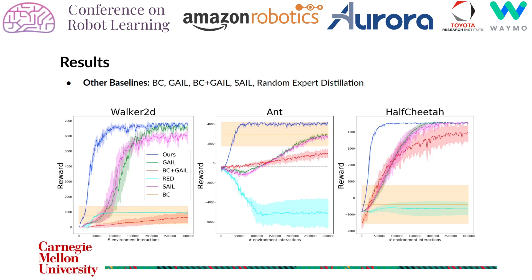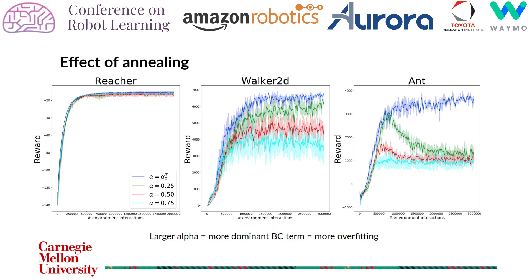We compare our method with 5 other baselines on 5 MuJoCo environments. Our method performs consistently and converges much faster than GAIL. We see the behavior cloning plus GAIL baseline does not perform well. We also compare the effect of annealing in our method. As the value of alpha increases, the overfitting and suboptimal behavior increases as well. Our method does not overfit and also does not compromise on the speed of learning. The blue curve is our method and the other curves are with fixed values of alpha.